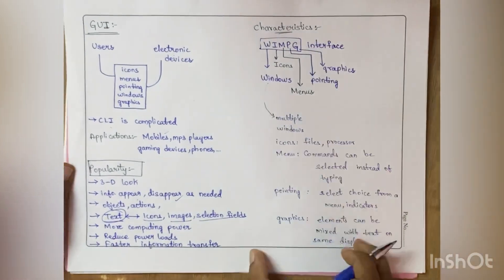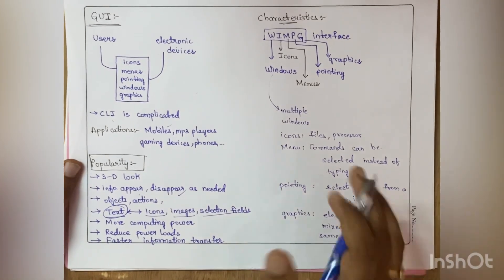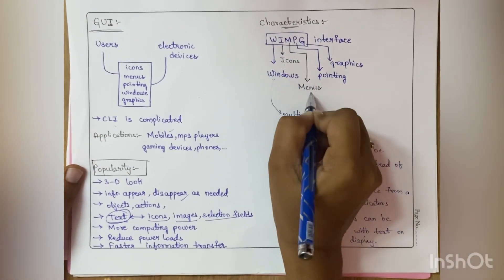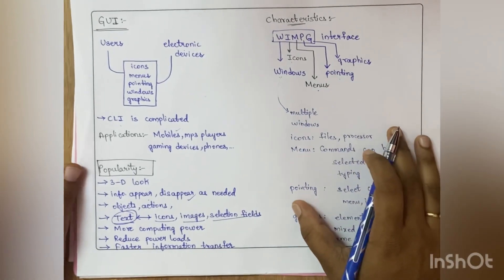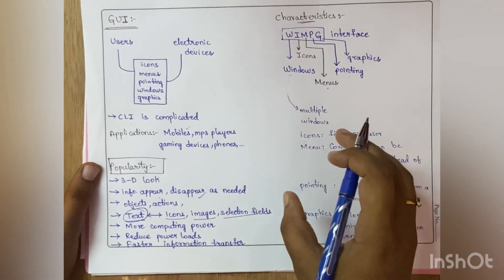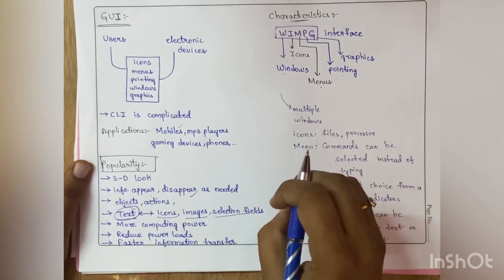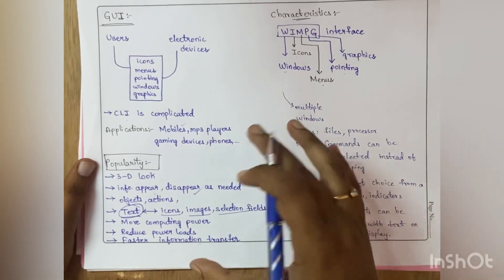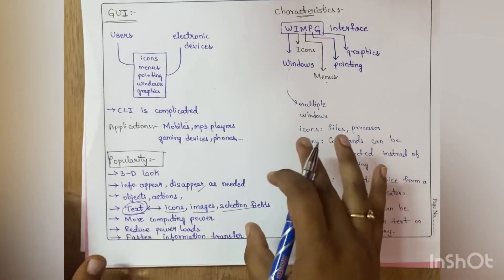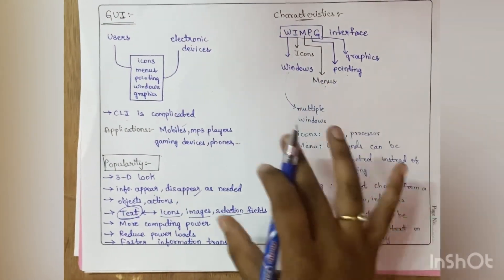WIMPG is windows, icons, menus, pointing, and graphics. What is windows? Say suppose in a laptop, at a time simultaneously you can watch a YouTube video and you can also study a PDF. That means multiple windows can be opened - GUI supports multiple windows. Coming to icons, say suppose we can drag a file.